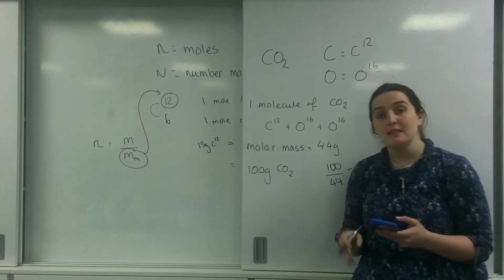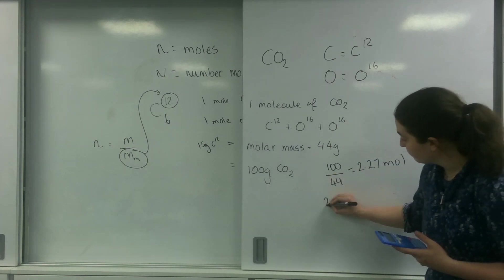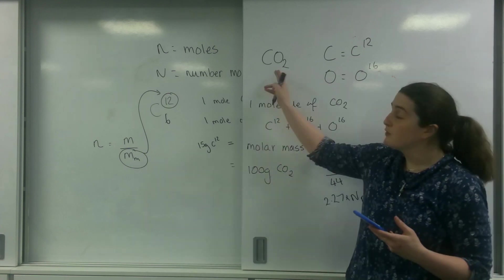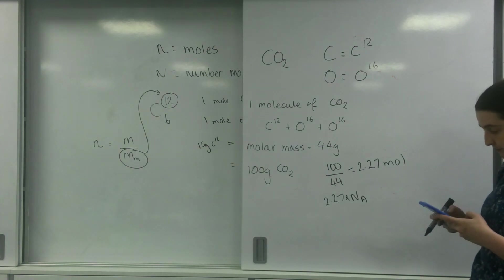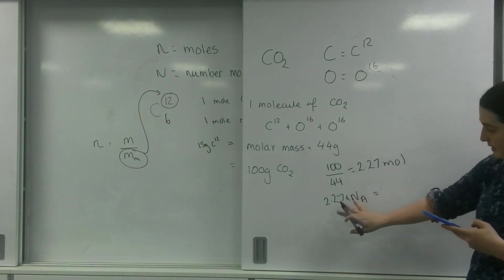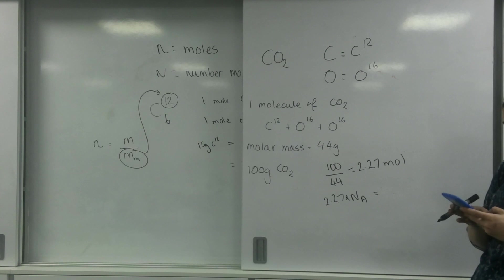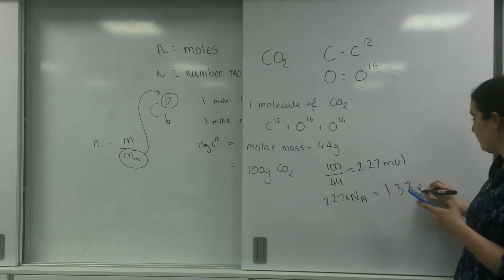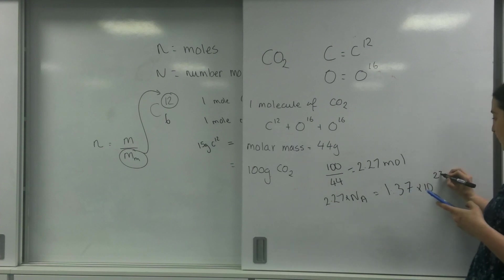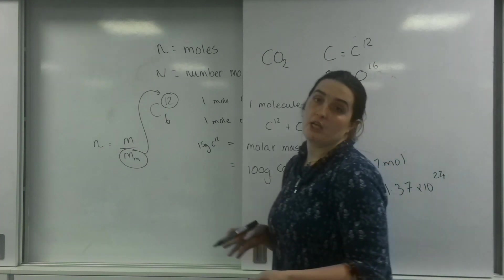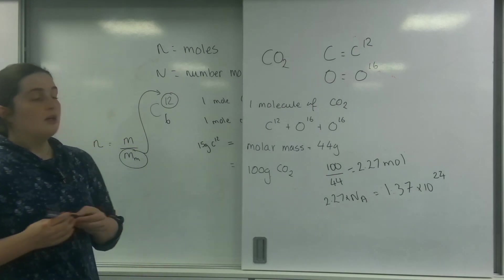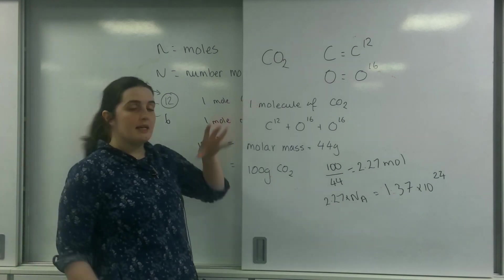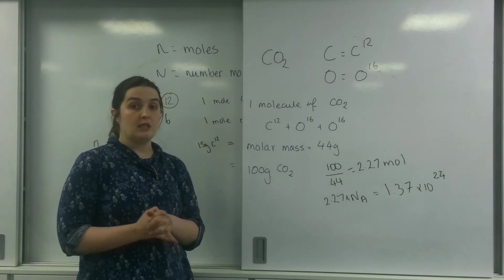And I can times this by Avogadro's constant to work out how many molecules of CO2 I have. So this times by 6.02 times 10 to the 23 is 1.37 times 10 to the 24 molecules of CO2. So what I'm doing here is finding out how many moles, how much mass is 1 mole of CO2.